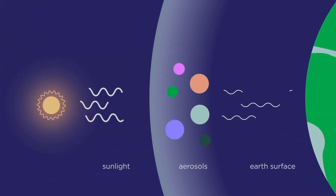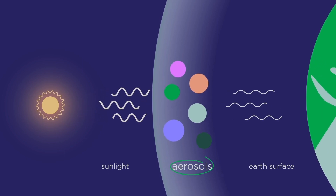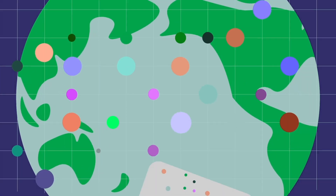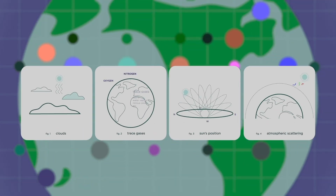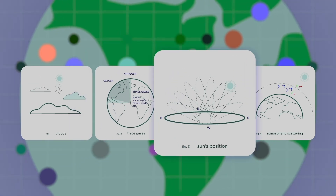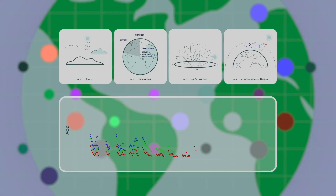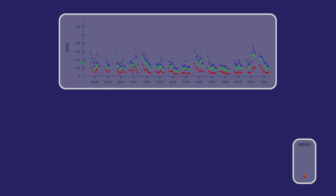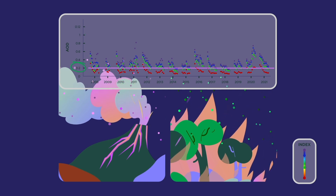AOD represents the total effect on direct sunlight from aerosols at different heights. So in most cases, it is not comparable with concentrations measured on the ground with in situ techniques. There are other factors that play a role in the amount of sunlight reaching the ground, such as clouds, trace gases, sun's position, and atmospheric scattering — these should be defined precisely to estimate AOD. Where there are very few aerosols, AOD is lower than 0.2, but in severe events that affect visibility, it is more than 1.